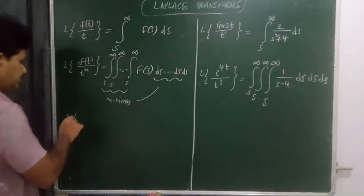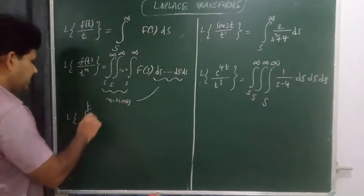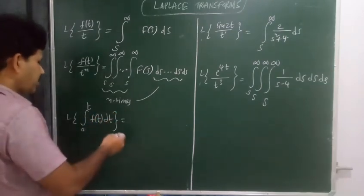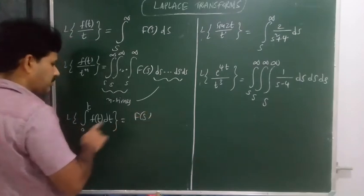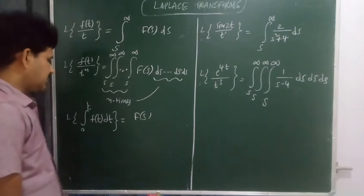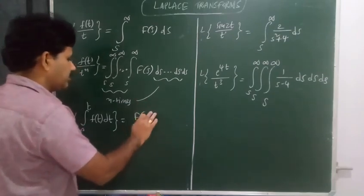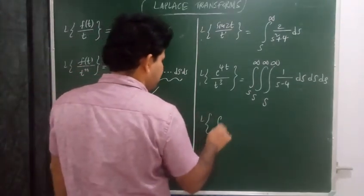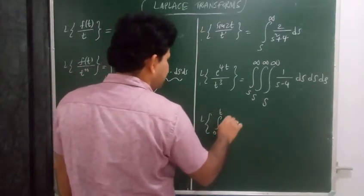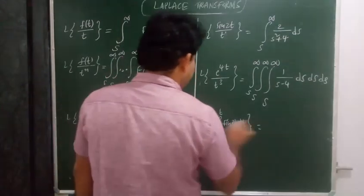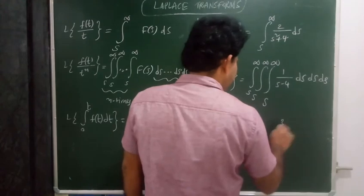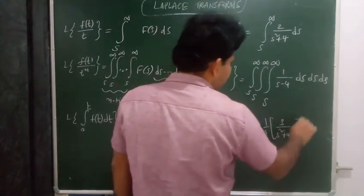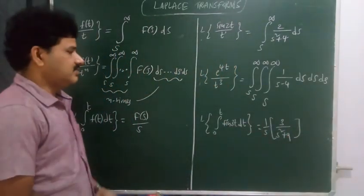Laplace transform of the integral from 0 to t of f(t) dt: since it involves integration, whose consequence is division by s, the result is F(s) over s. For example, L{∫₀ᵗ sin(3t) dt}: L{sin(3t)} is 3 over s squared plus 9, and integration gives 1/s times 3 over s squared plus 9.